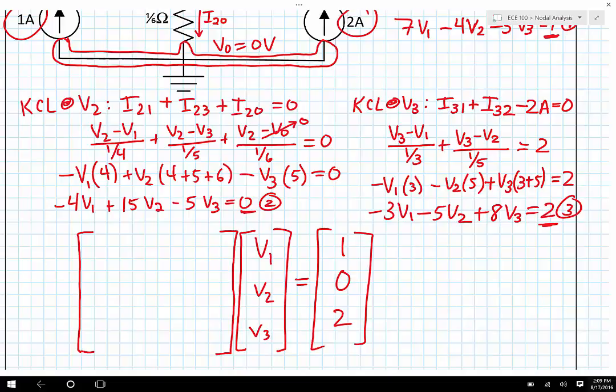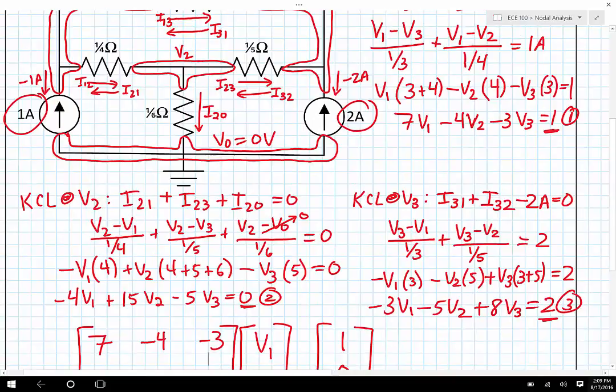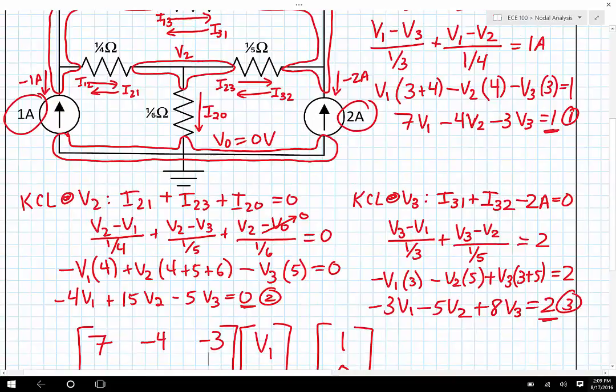Now I need to fill in the middle elements here. And so those middle elements, I'm going to have 7, and negative 4, and negative 3. Let me scroll back up, so you can see 7, negative 4, and negative 3. Then I'm going to have negative 4, and 15, and negative 5. Negative 4, 15, and negative 5. Then I'm going to have negative 3, negative 5, and positive 8. Negative 3, negative 5, positive 8.